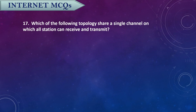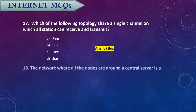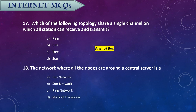Question seventeen: Which of the following topologies shares a single channel on which all stations can receive and transmit? The answer is bus topology. Question eighteen: The network where all the nodes are around a central server is a star network.